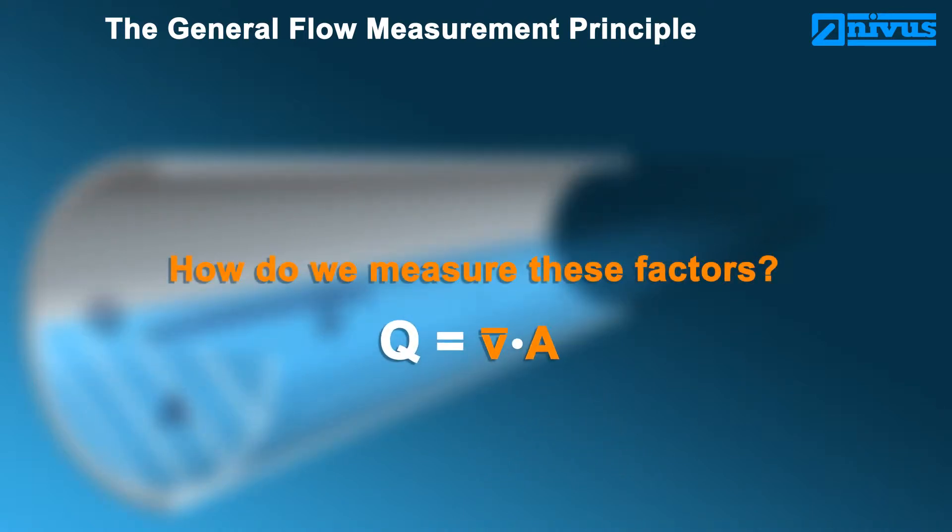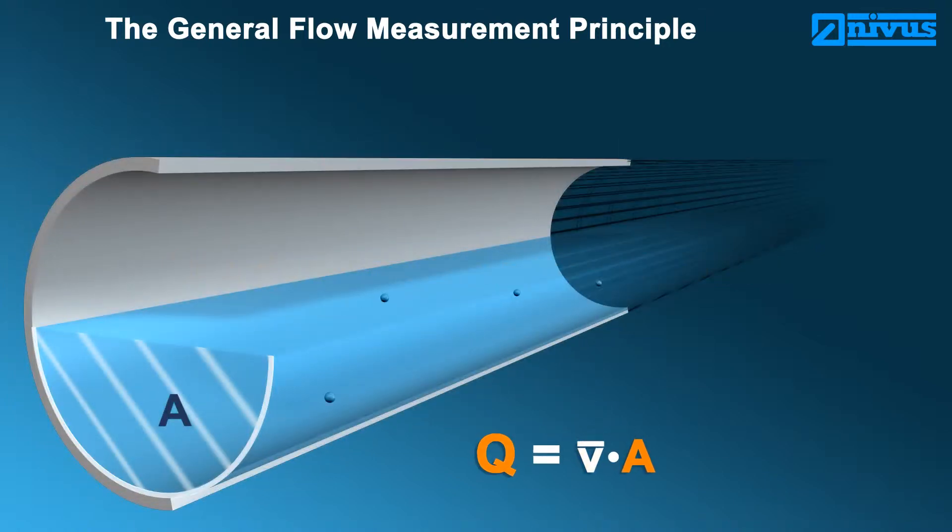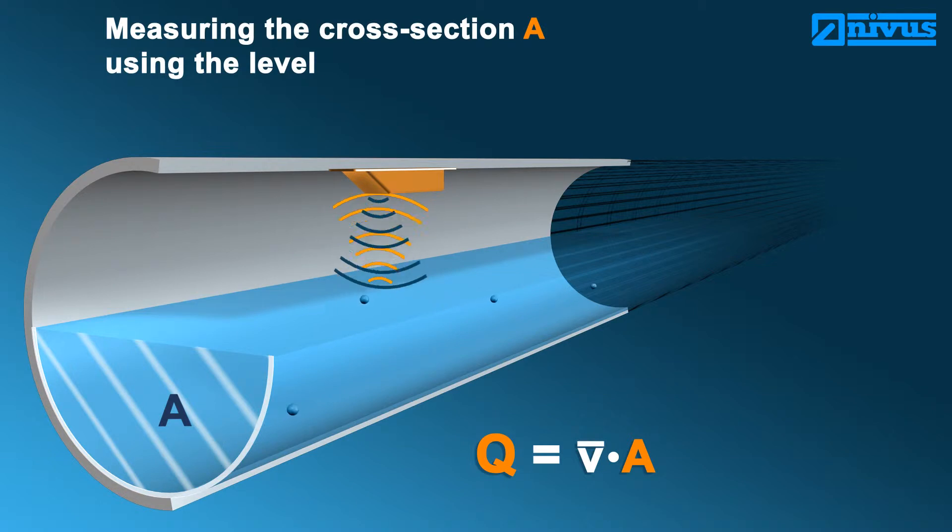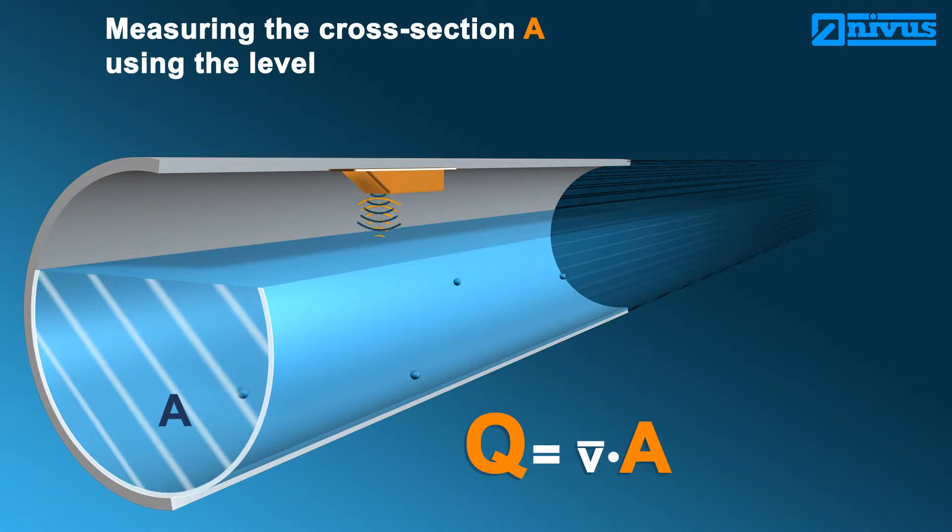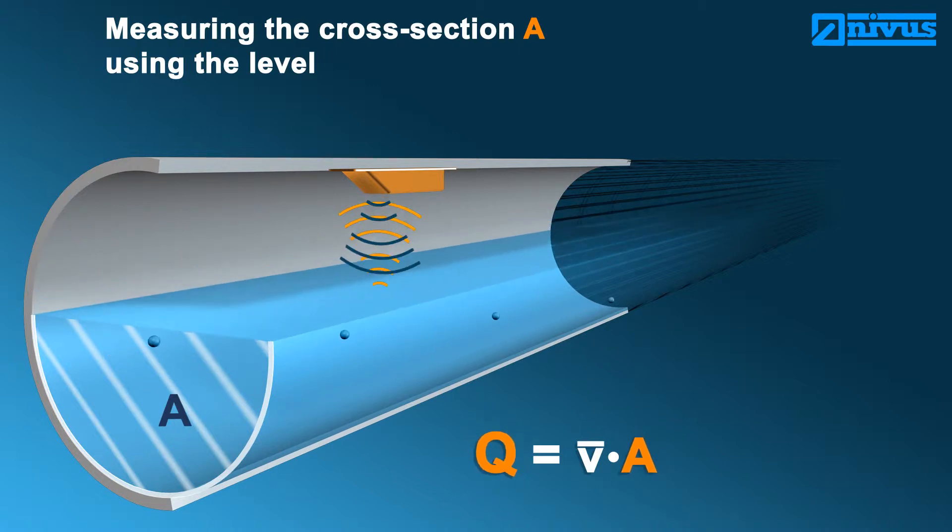How do we measure these factors? The flow cross-section A is determined by continuously measuring the level in consideration of the channel shape. If the level changes, the flow cross-section will change accordingly, and hence flow will change as well.